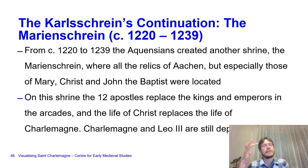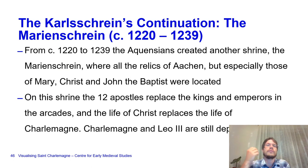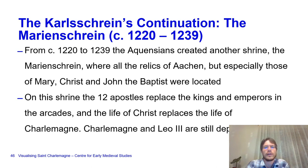However, scholars often ignore that there is a continuation in terms of iconography and programme in the Marienshrine. From about 1220 to 1239, the canons of Aachen created another shrine, the Marienshrine, where all the relics of Aachen—especially those of Mary, Christ, and John the Baptist—were located. On this shrine, the 12 apostles replaced the kings and emperors in the arcades, and the life of Christ replaces the life of Charlemagne.